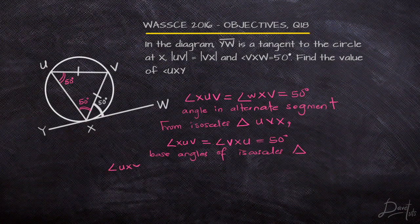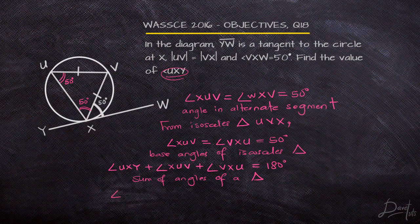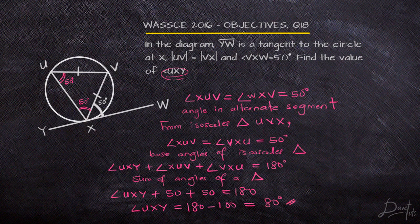Looking at this, we know that angle UXY, angle VXU, and angle VXW are all on a straight line. We know that the sum of angles on a straight line is 180 degrees, and easily that ensures we can solve our question. It's as simple as that — just understand the principles applied. There are many ways you can solve this also.